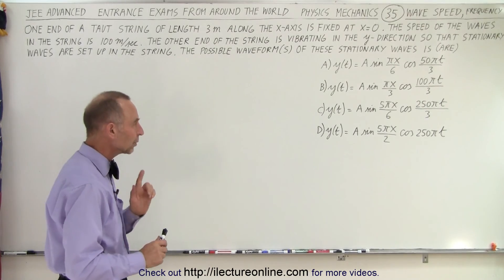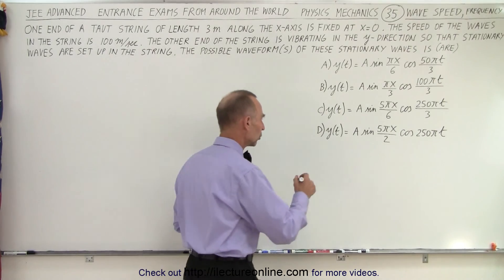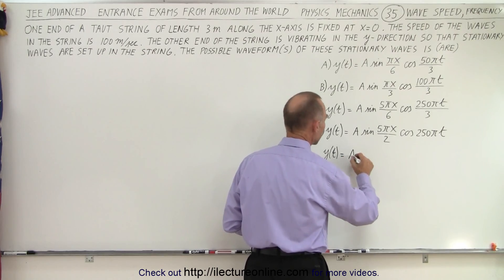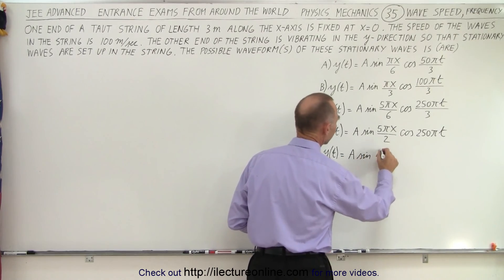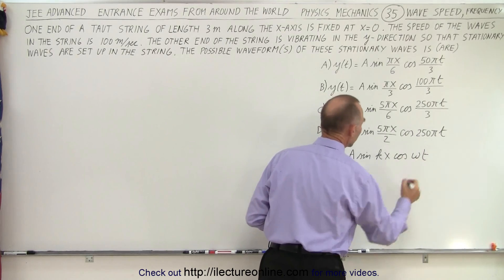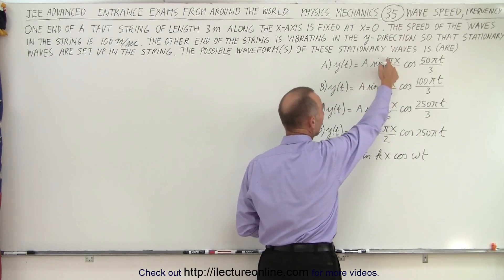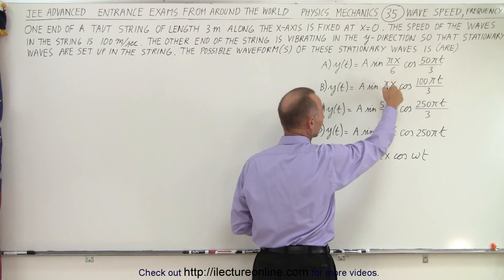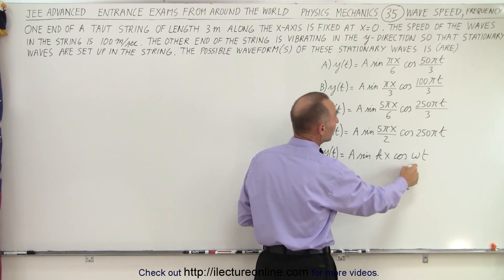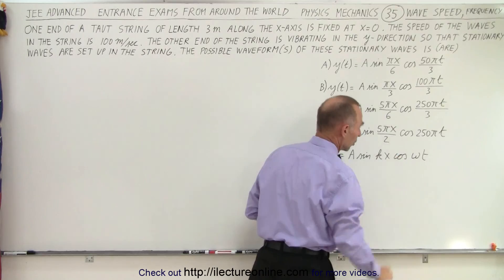We need to recognize the general equation of a standing wave: y as a function of t is equal to A times sine of kx times cosine of ωt. We can see that k can be π/6, π/3, 5π/6, or 5π/2 potentially, and ω can be 50π/3, 100π/3, 250π/3, or 250π.